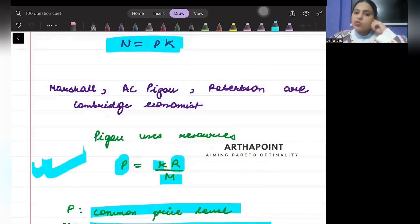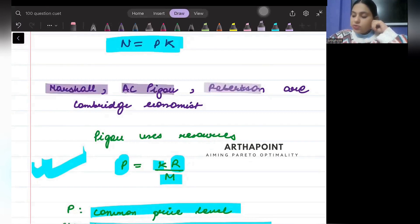These economists - Marshall, Pigou, Robertson - they are also called the Cambridge school of thought of economists.